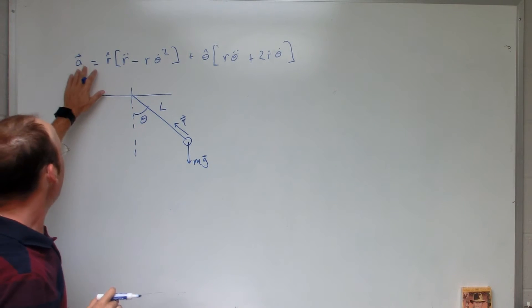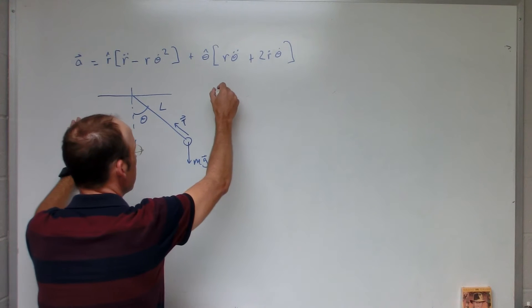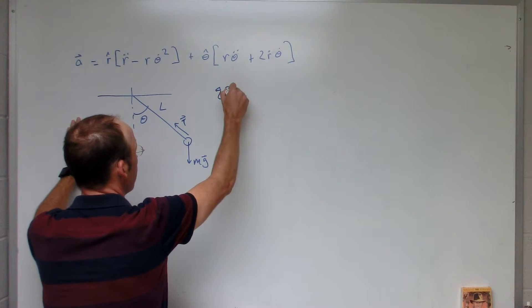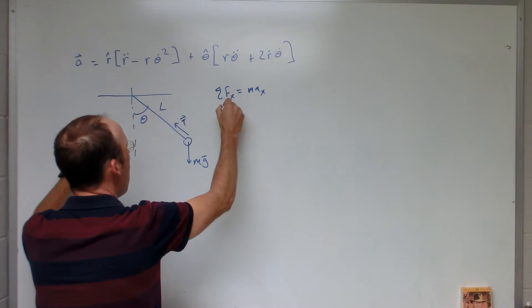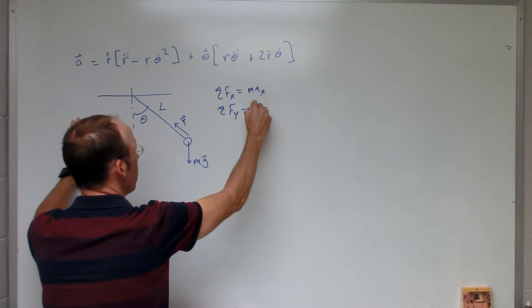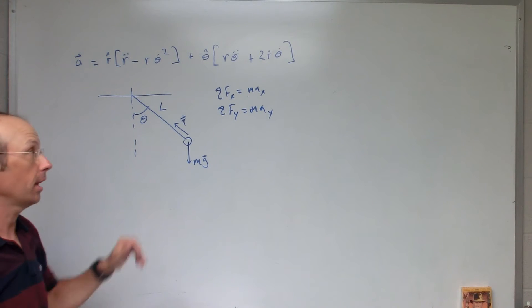Okay, so if that's my acceleration, then I can write, if I did this in Cartesian coordinates, I would say this. I would say the sum of the forces in the x direction equals mass times acceleration of the x. The sum of the forces in the y is mass times acceleration of the y. So, I'm doing it in polar coordinates, and I want to do the same thing.